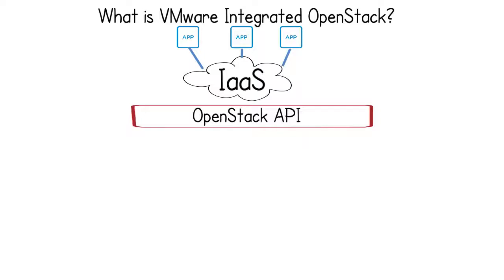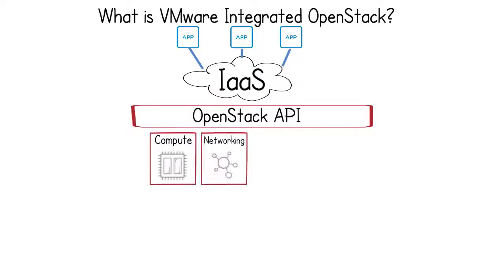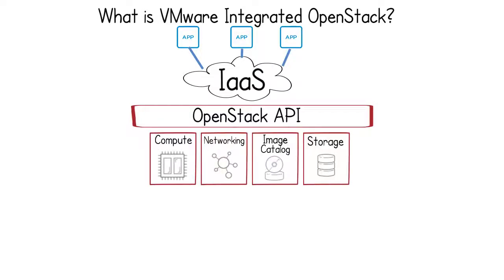As a cloud operating system, OpenStack controls large pools of compute, networking, image, storage, and other resources throughout a data center. The OpenStack APIs simplify the consumption of virtual infrastructure technologies.